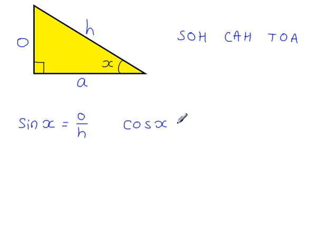Cos X, the cosine of X, is equal to adjacent divided by hypotenuse. And tan X is equal to the opposite over the adjacent.